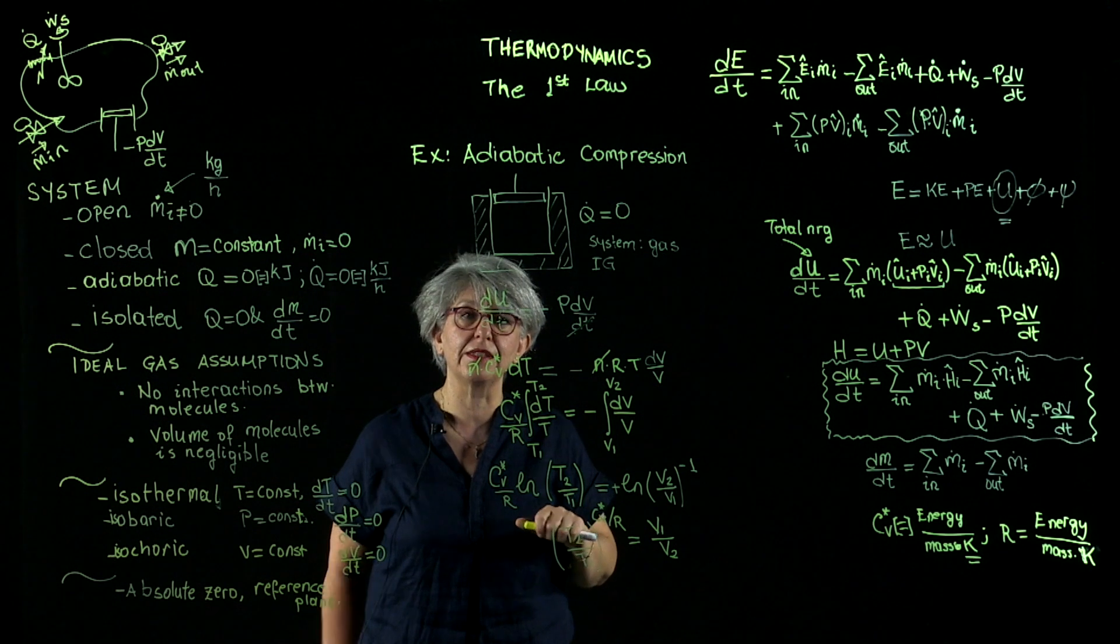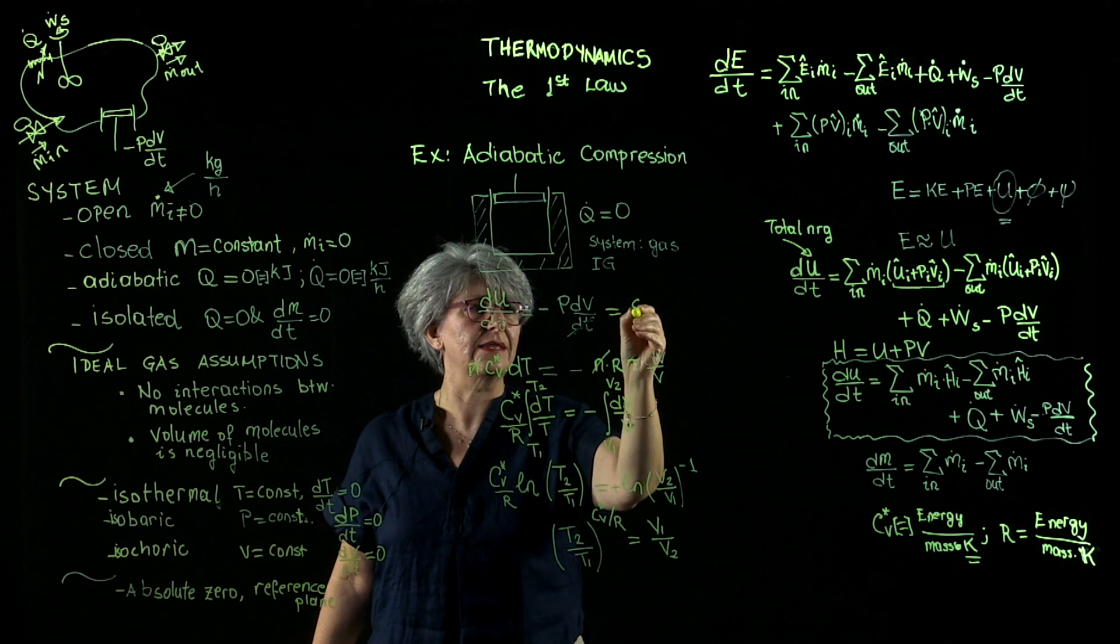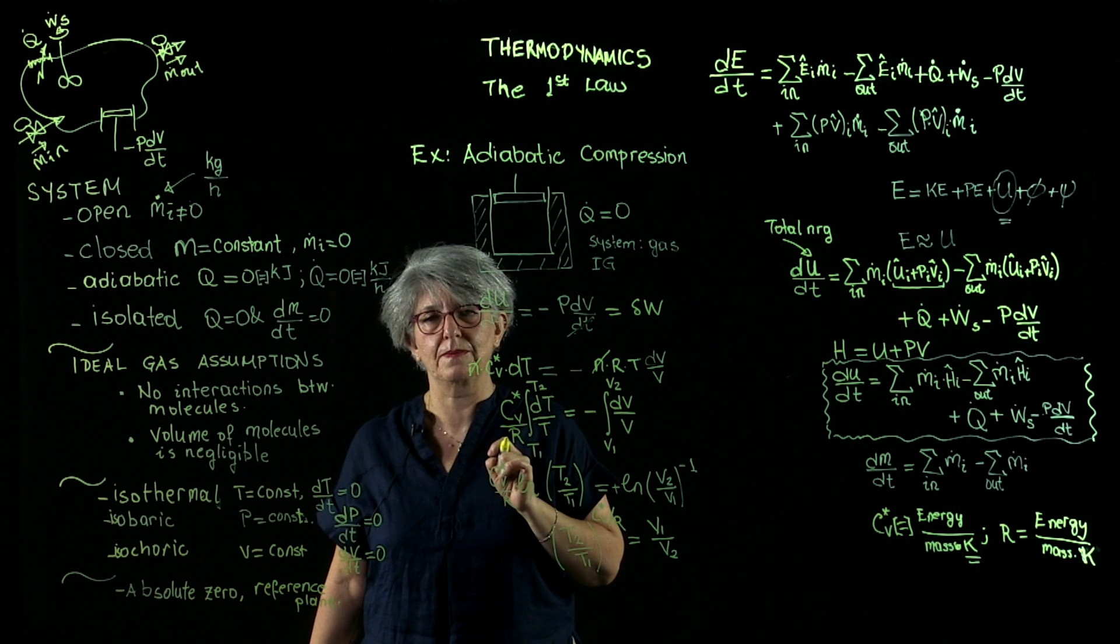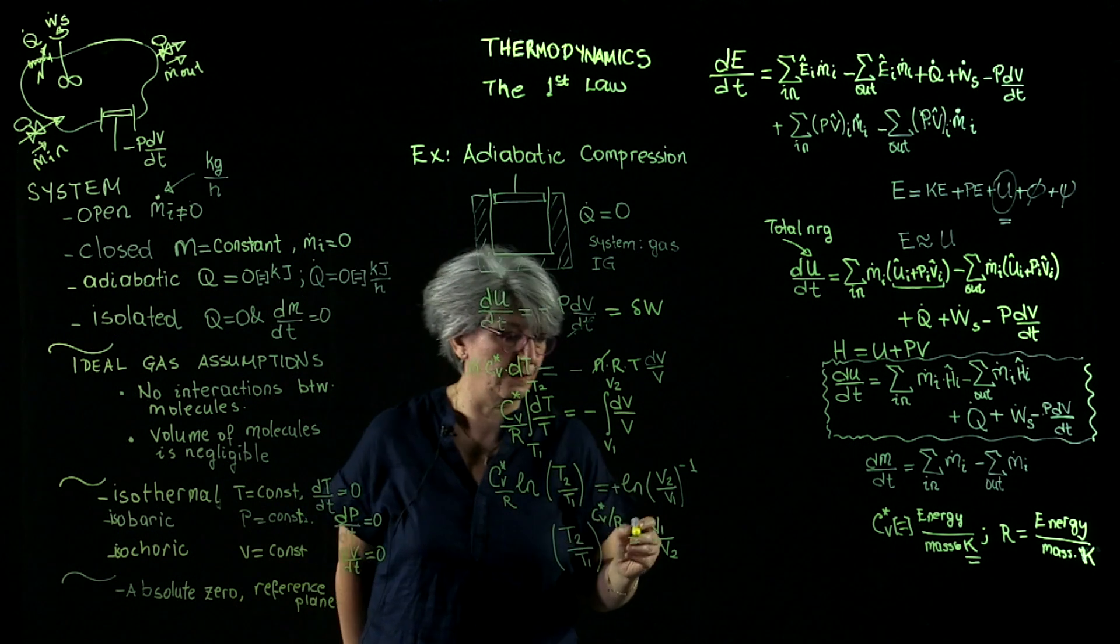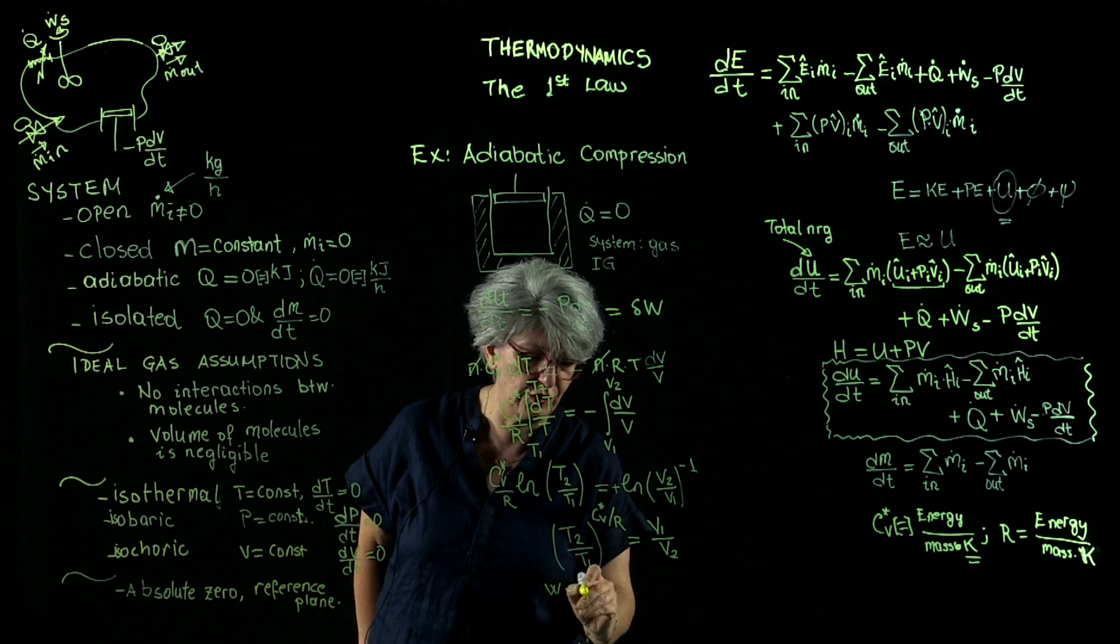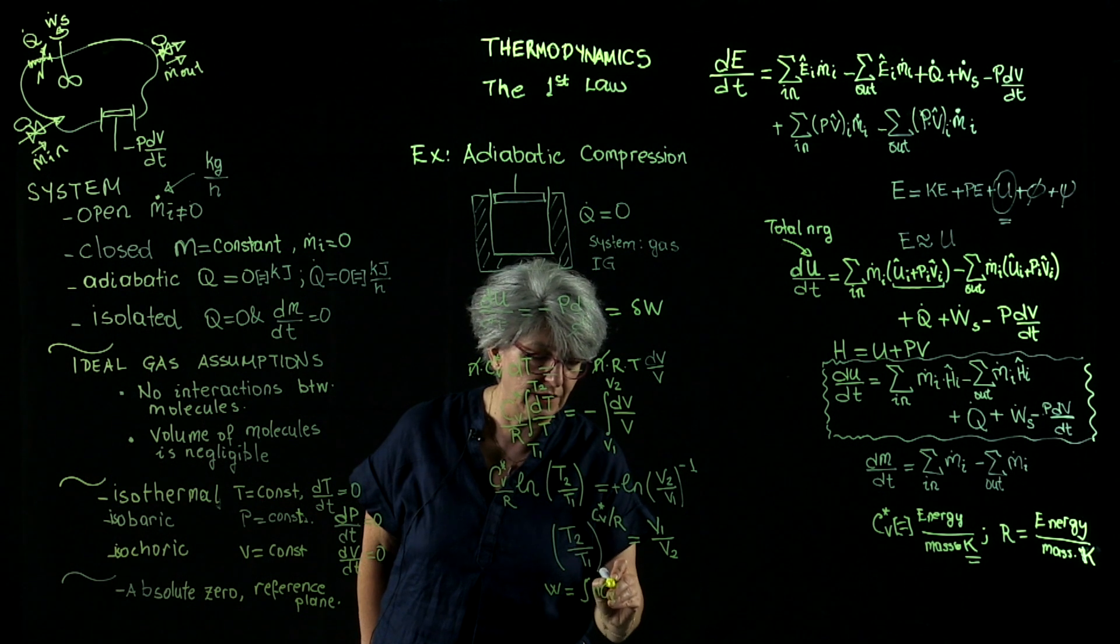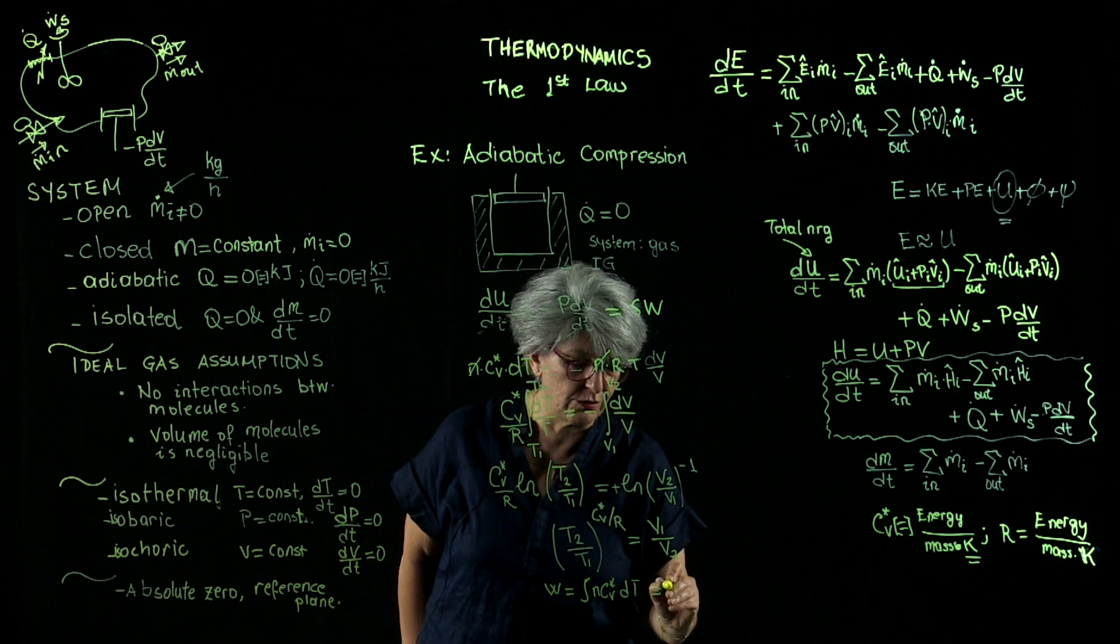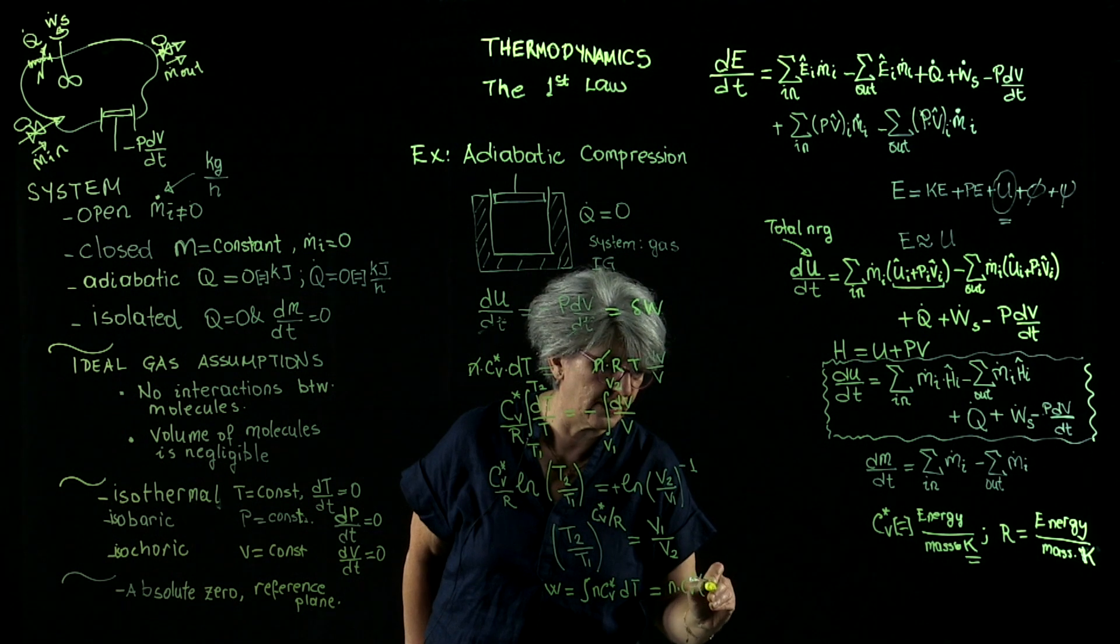Now let's calculate the work. This is work, right? This is delta work. This is the differential work. So the total work must be equal to integral of du. That is equal to n times cv* times dt. And work is equal to n times cv* times (t2 minus t1).